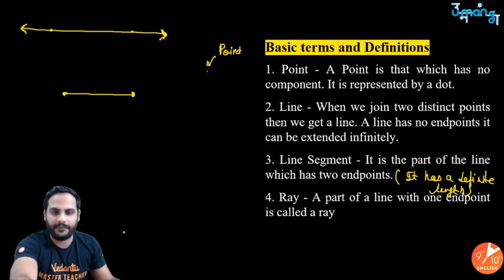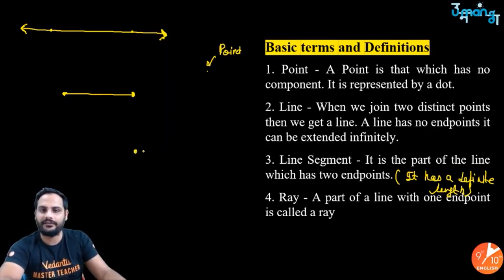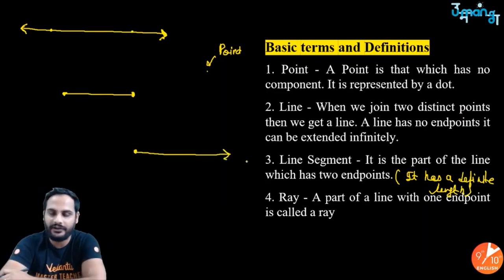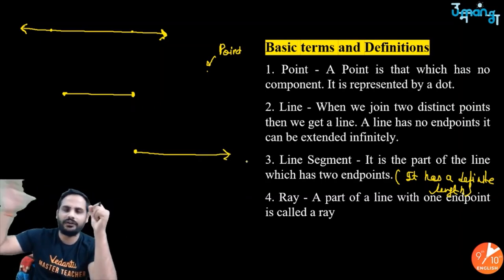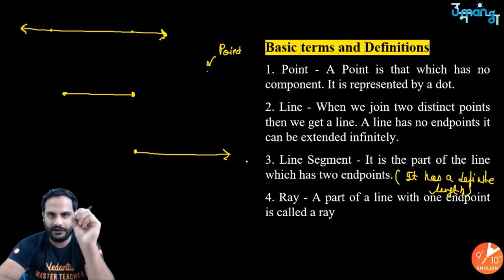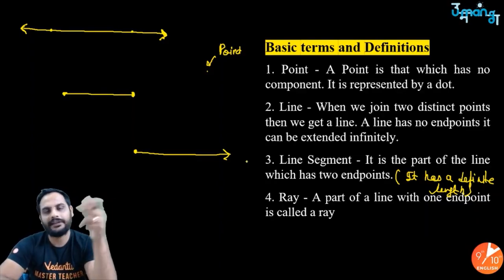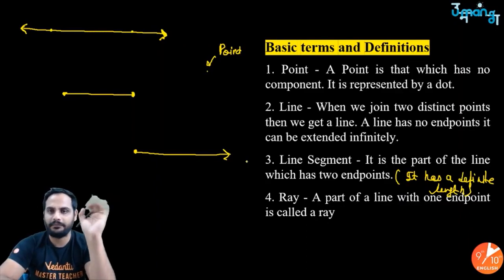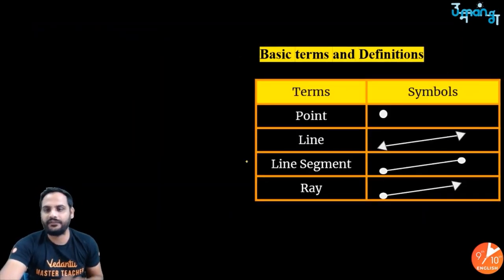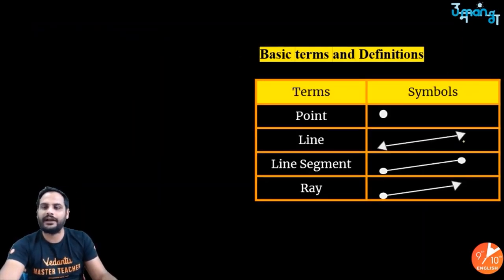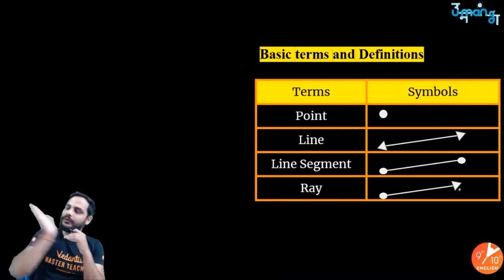Then comes the ray. In a ray, one endpoint is fixed and the other end can be extended indefinitely. So we cannot measure the length of a ray or a line, but the length of a line segment can be measured. To summarize: point is dimensionless; line has no fixed endpoints; line segment has both endpoints fixed; ray has one fixed endpoint and one that extends. An arrow means you can extend it; a dot means a fixed endpoint.